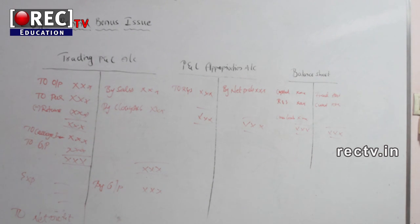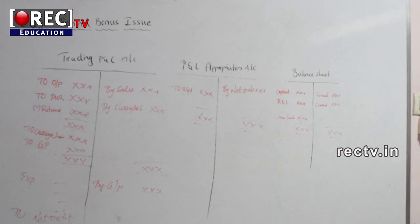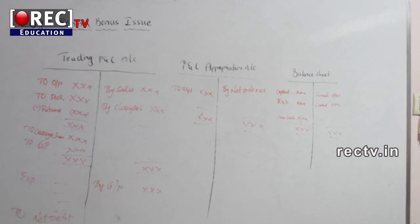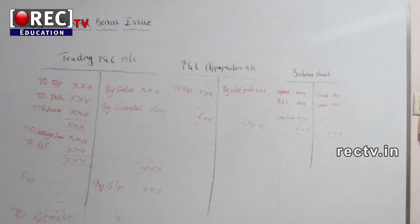If the government asks the company to pay tax on the net profit, the company can say that this amount is not going out of the company — they are simply transferring from one account to another, that is from the P&L appropriation account to reserves and surplus. After that, slowly they transfer from reserves and surplus to equity in the form of issuing bonus. So the cost of bonus is nil because the investor pays nothing. This is the simple logic behind the bonus issue.